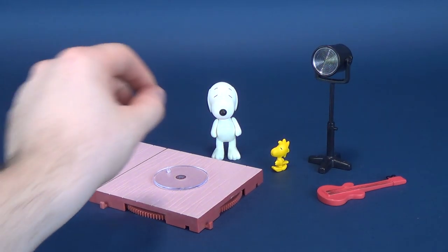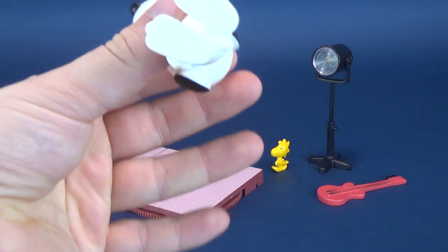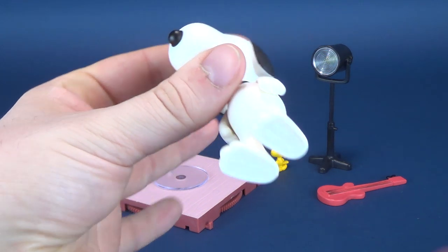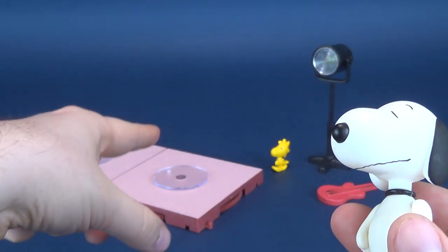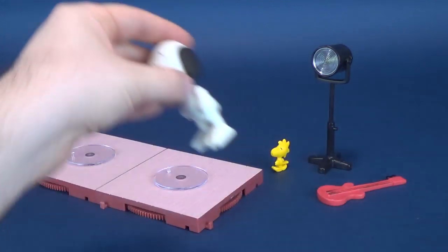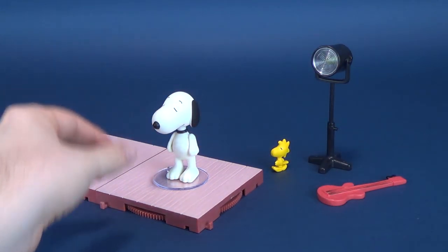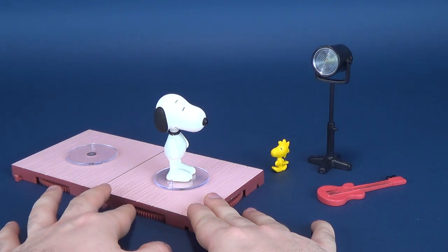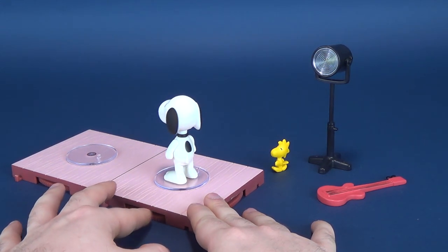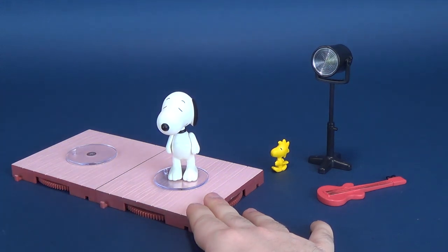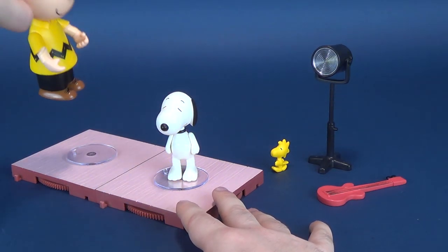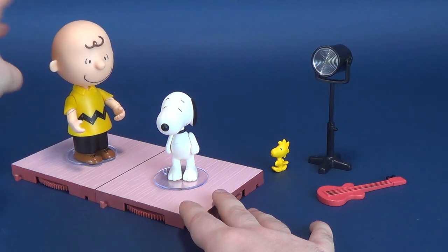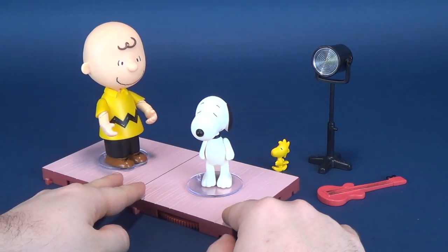Unfortunately though, one of the problems with Snoopy is if you flip him upside down, he doesn't have any peg holes. So it really defeats the purpose that his stand would have had a peg. You could still in theory put him on top of the stand, and then again you're just going to spin this around to simulate the fact that they're dancing.